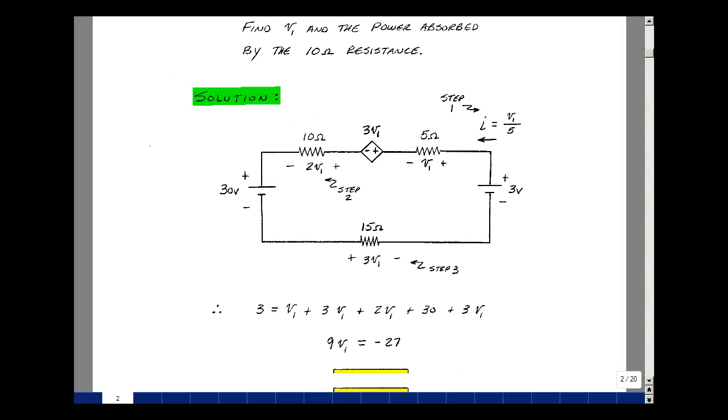Now I can solve for V1 because I can go around this single-loop circuit and use Kirchhoff's voltage law. I'm going to start anywhere. I'll start over here and work my way around in a counterclockwise direction. So the rise in voltage is 3. The drop is V1, 3V1, 2V1, 30, and 3V1. That's my equation right over here.